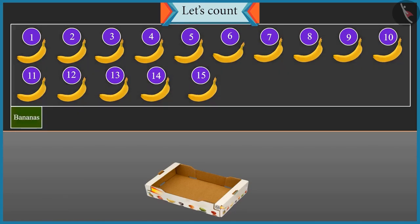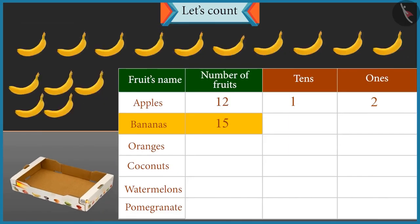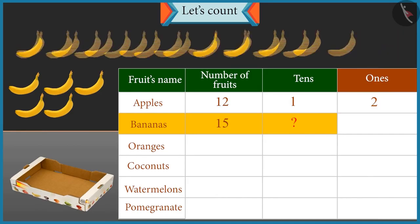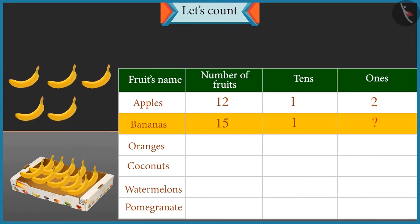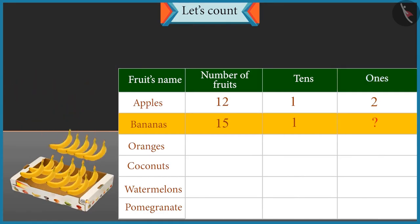There are fifteen bananas. How many tens are there in fifteen? A group of ten will be formed, so there is one ten in fifteen. And how many ones are there? There are five bananas left, so there are five ones.